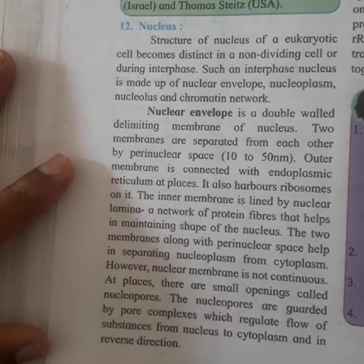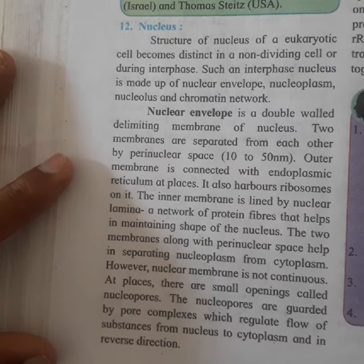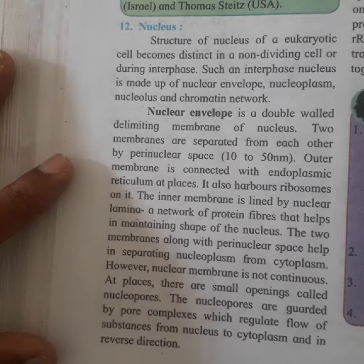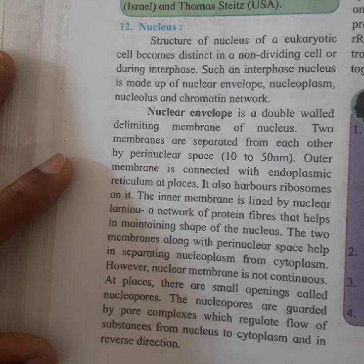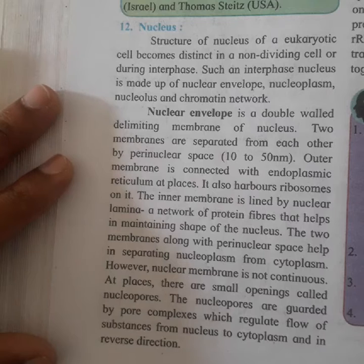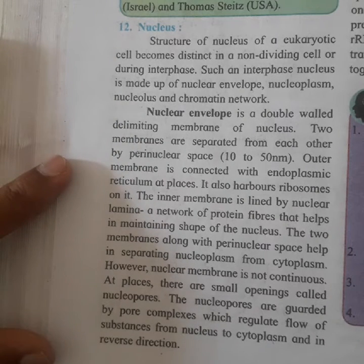Hello, good morning students. Today we are going to discuss a new topic: the nucleus. We know that the eukaryotic cell has three basic components. We have already discussed these three basic components of the eukaryotic cell: firstly the nucleus, then the cytoplasm, and third the plasma membrane or cell membrane. In the previous lecture we completed our discussion of the plasma membrane, cytoplasm, and membrane-bound organelles present in the cytoplasm. Now we move towards the next point: the nucleus.